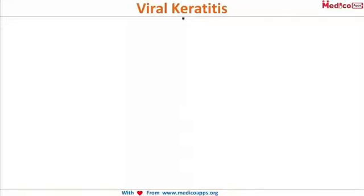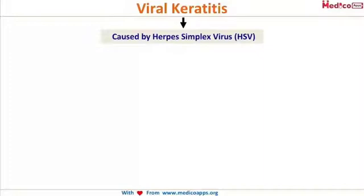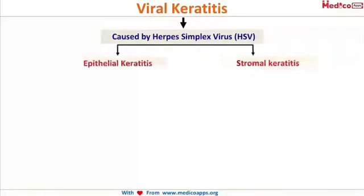This is viral keratitis, caused by herpes simplex virus. The herpes viruses are the ones that affect the cornea; most other viruses don't. It can affect the cornea in two different types: it can be only an epithelial keratitis, or it can go deep into the stroma and cause a stromal keratitis.